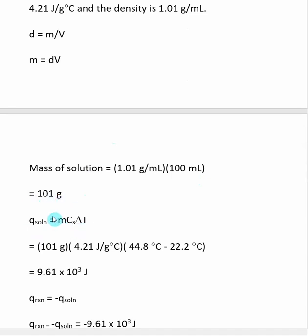Mass we just found, so that's the mass of the solution. Here is the specific heat that was given. And then delta t is t final minus t initial, and both of those values were given. When we're done, we get that q solution equals 9.61 times 10 to the third joules.